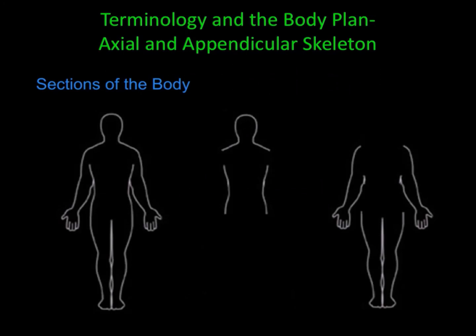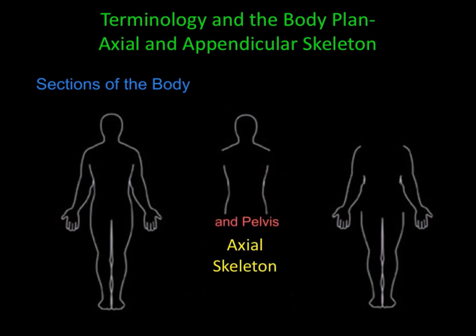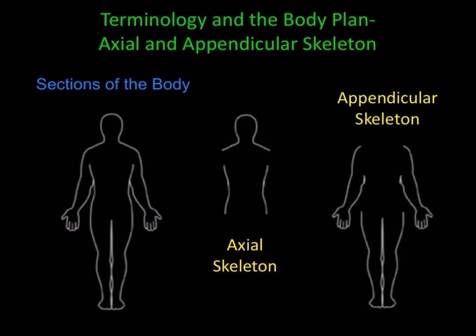In this lecture we're going to discuss the different sections of the body along with the different body parts. There are two major sections of the human body. The first section includes everything located in the middle of the body — the head, trunk, and abdomen — which we call the axial skeleton. Everything outside of the axial skeleton, which includes the arms and the legs, is called the appendicular skeleton. The arms are called the upper appendicular skeleton and the legs the lower appendicular skeleton.